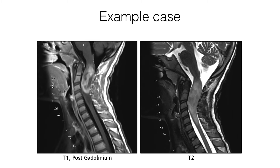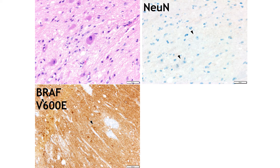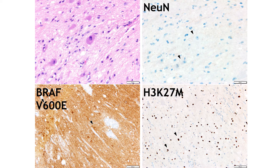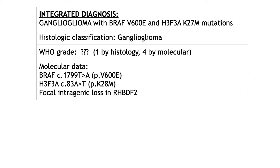Here is a tumor in a child that occurred in the cervical medullary junction — it was contrast-enhancing and intra-axial. On biopsy it had features of ganglioglioma: a clear neoplastic glial component, smaller atypical cells in the background, and clear neurons also present. Lack of staining by NeuN, a mature neuronal marker, indicates these are part of the neoplasm, and diffuse presence of the mutation-specific BRAF V600E antibody indicates this is indeed a ganglioglioma. However, given the midline location, histone 3 staining was also performed, and many of the tumor cells were positive. Both mutations were confirmed by sequencing — by histology we're left with a grade 1 ganglioglioma, but grade 4 given the presence of the histone mutation. So how do we handle such a case?